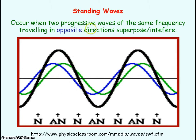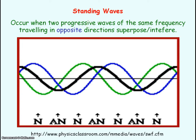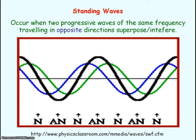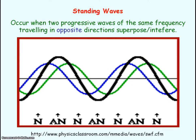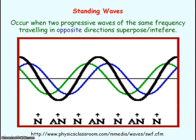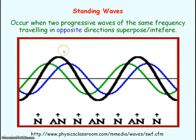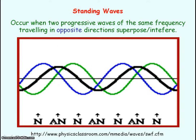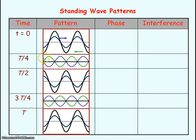A key thing to note is that the crest of the standing wave is not moving along — it's staying at its same position. So it's a stationary wave. Here are the standing wave patterns at five different moments of time: at time equals zero, a quarter of a period later, half a period later, three quarters of a period later, and a full period later.